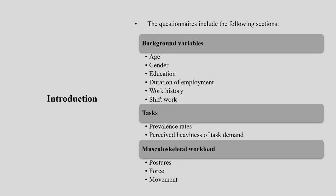The questionnaire includes several sections, which we will take one by one. First are background variables — personal information — so you need to know age, gender, education, duration of employment, work history, and shift work. From the first section of your survey you have six total variables: age, which is very important and very much connected to musculoskeletal disorder, gender, education, duration of employment, work history, and shift work.